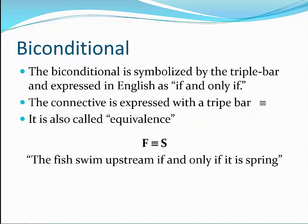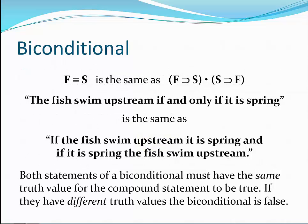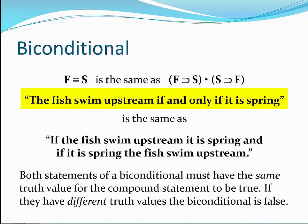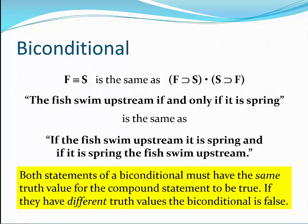The next connective is the biconditional, also called equivalence. It is expressed by the English if-and-only-if, and the symbol for the connective is the triple bar. For instance, the fish swim upstream if-and-only-if it is spring can be expressed as F triple bar S. The biconditional means the same thing as two conditional statements with the terms reversed and connected with and: the fish swim upstream if-and-only-if it is spring means the same as if the fish swim upstream then it is spring, and if it is spring then the fish swim upstream. For a biconditional compound statement to be true, both of its statements must have the same truth value — either both true or both false. The biconditional is only false when the two statements have different truth values.